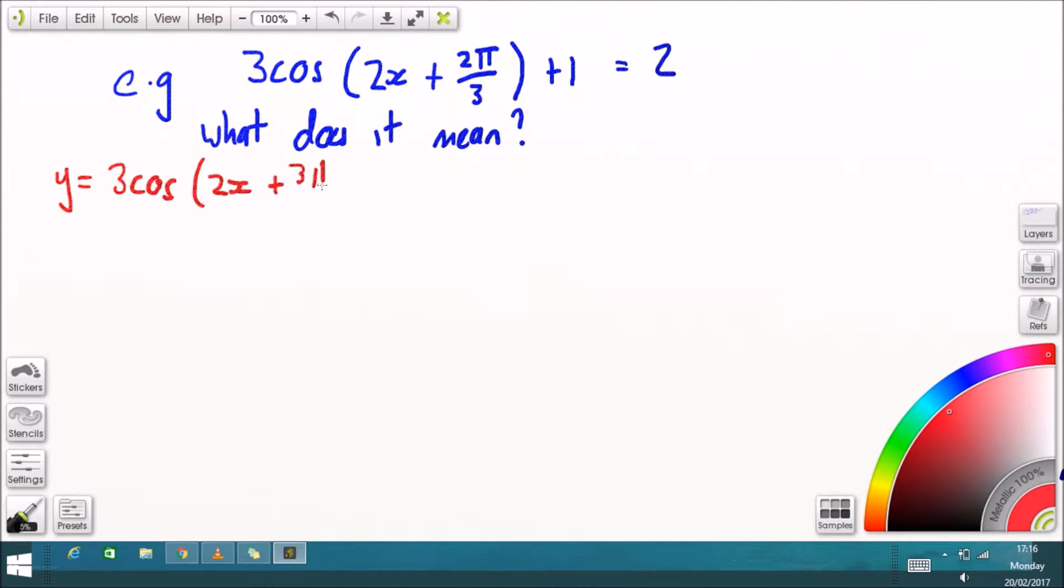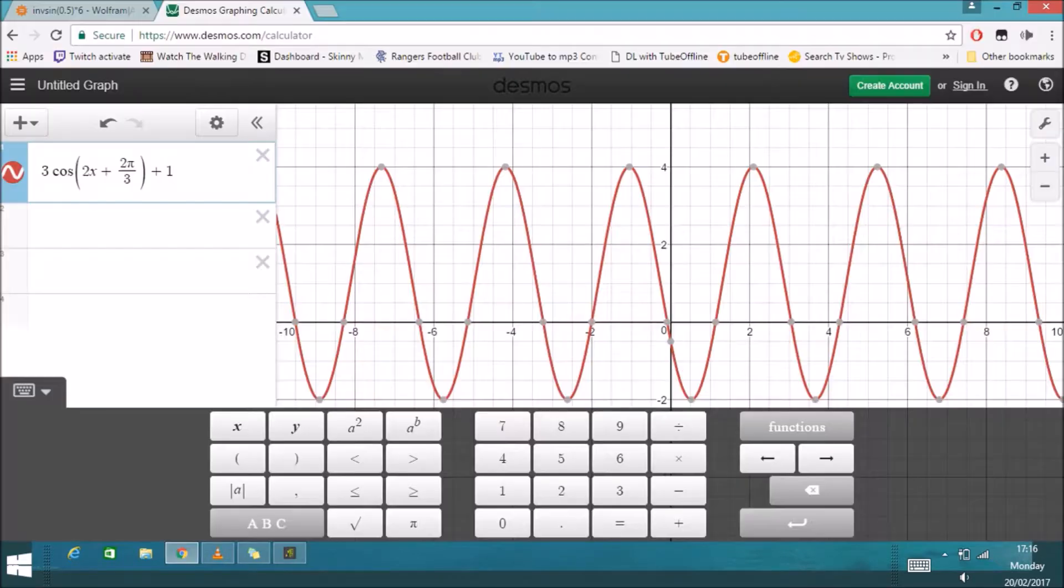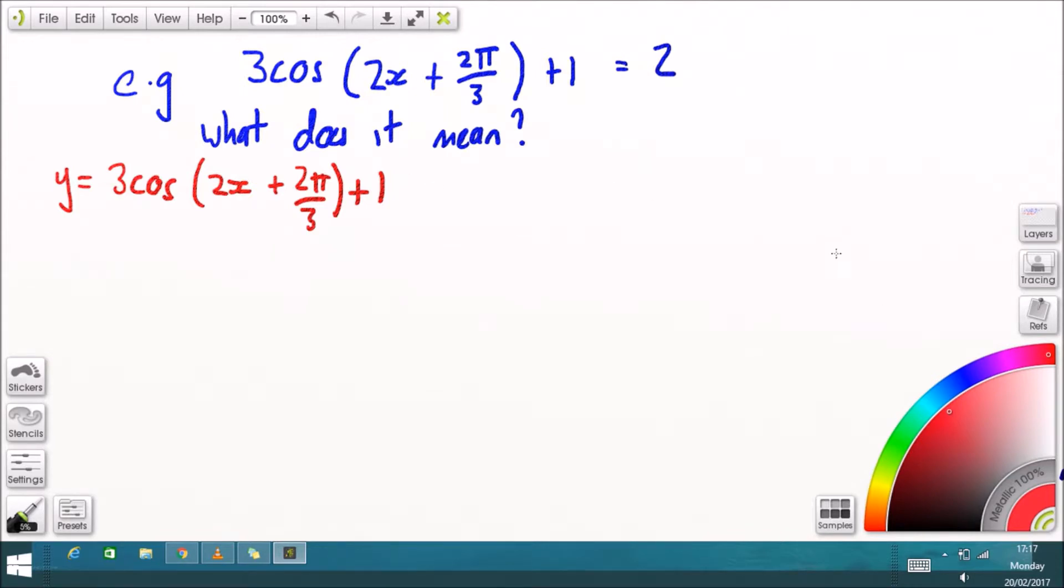Well, we've got a function. Here's another example. We've got the function y equals 3 times cos of all that stuff plus 1, and that's just a function, looks like that. That could be anything, like a function of anything, like the tide, the temperature, the distance of the moon to earth.